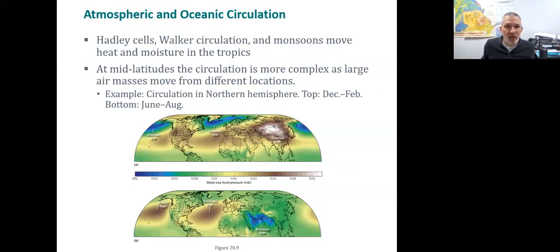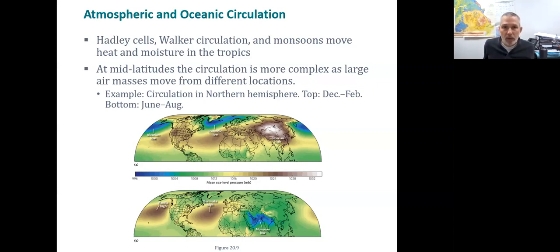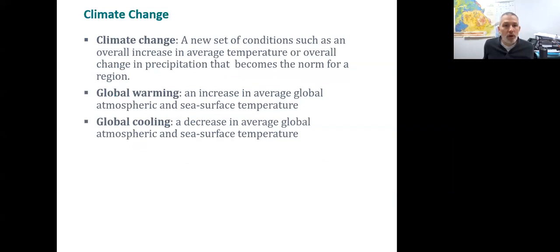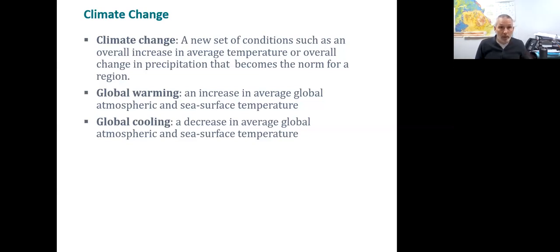We've already talked about Hadley cells and Walker circulation in the ocean, and these are all a result of those seasons. Air switching from moving over the ocean onto land can cause monsoons; air moving over land to the ocean causes dry seasons. These Hadley cells are very important in terms of overall climate, and they're why we have the great deserts of the world.